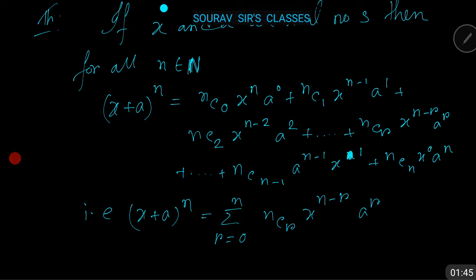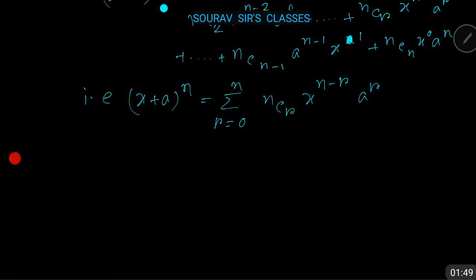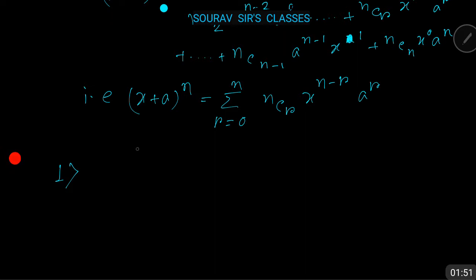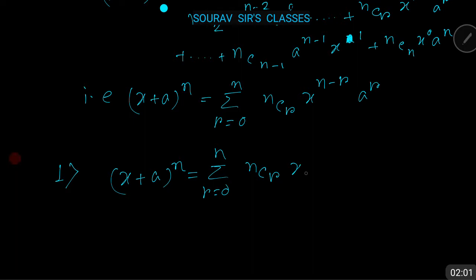Now the properties of binomial expansion. Property number one: (x + a)^n = Σ(r=0 to n) nCr · x^(n-r) · a^r. Since r can have values from 0 to n, the total number of terms in the expansion is n + 1.